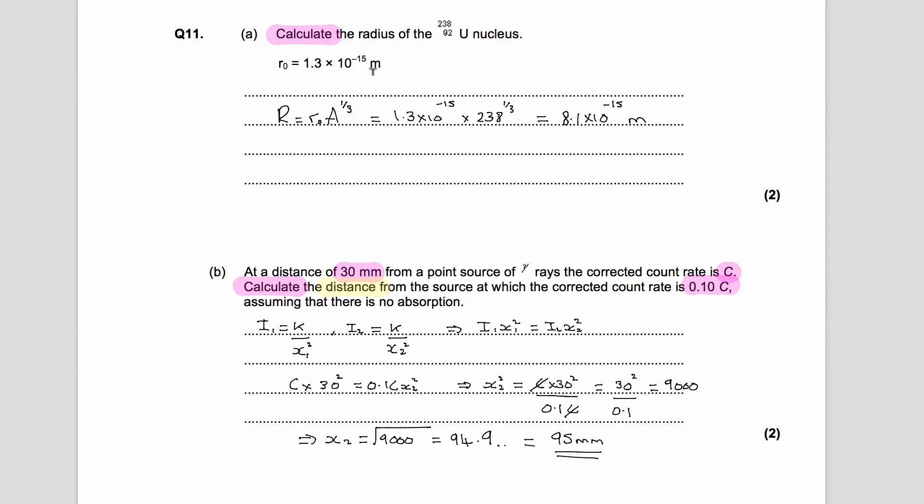Well, there's only really one way we can do this. We use this equation here that tells us that the radius of the nucleus is equal to that constant multiplied by A to the third, where A is basically the mass number of this thing, so it's 238.